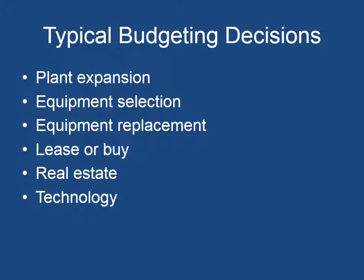Your typical capital budgeting decisions include things like: do I want to expand the plant? If I'm a manufacturing company, instead of buying a new plant, do I just want to expand the existing plant? Equipment selection — do I want to buy new equipment or replace existing equipment? If I'm introducing a new product, I might have to buy new equipment. Do I want to lease or buy? Would I buy land or invest in a new building? And technology — we always have to have technology updates.